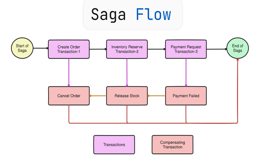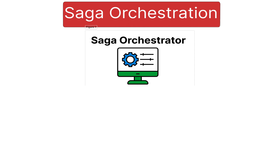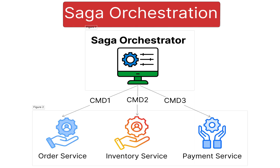There are two ways to implement the Saga design pattern: orchestration and choreography. In Saga orchestration, there is a central controller called the Saga orchestrator that manages the entire business process step by step. Each service involved in the process doesn't act on its own or emit events. Instead, it simply waits for the orchestrator to tell it what to do next.